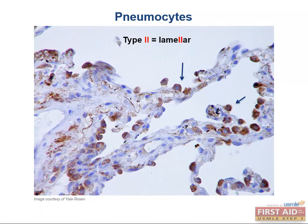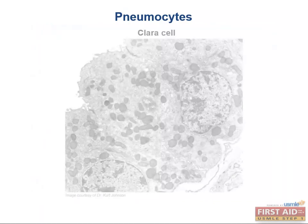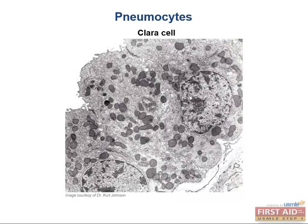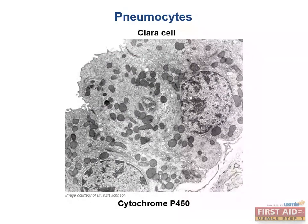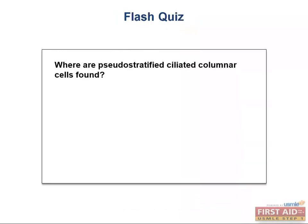What other cells are important to know about? Clara cells are non-ciliated columnar cells with secretory properties. They're found in the bronchioles and not in the alveoli. They protect the bronchial epithelium by secreting a surfactant-like solution and also degrade toxins via the cytochrome P450 pathway. Flash quiz: where are pseudostratified ciliated columnar cells found? Only in the conducting system, where they're sweeping out dirt and mucus.